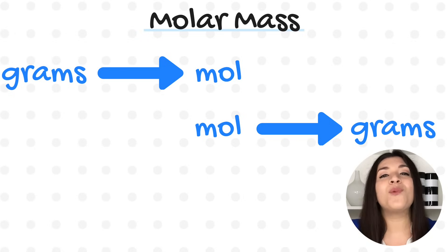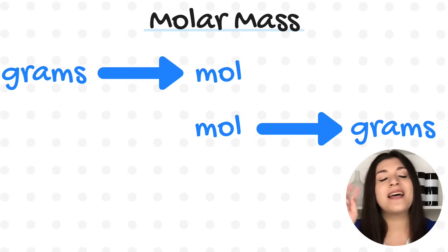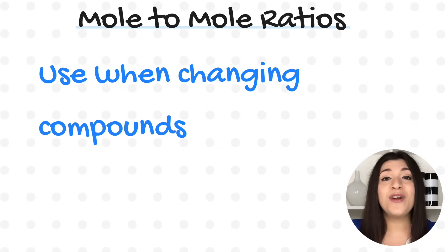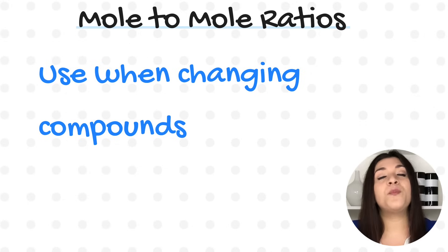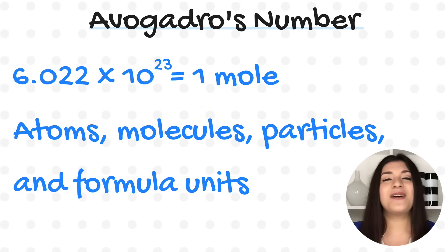Before we begin, remember there are three different types of conversion factors for stoichiometry. The first type is molar mass — we use molar mass whenever we're converting from grams to moles or moles to grams. The second one is a mole-to-mole ratio, which is found on your balanced equation. You use a mole-to-mole ratio whenever you are changing your compound. And the last one is Avogadro's number.